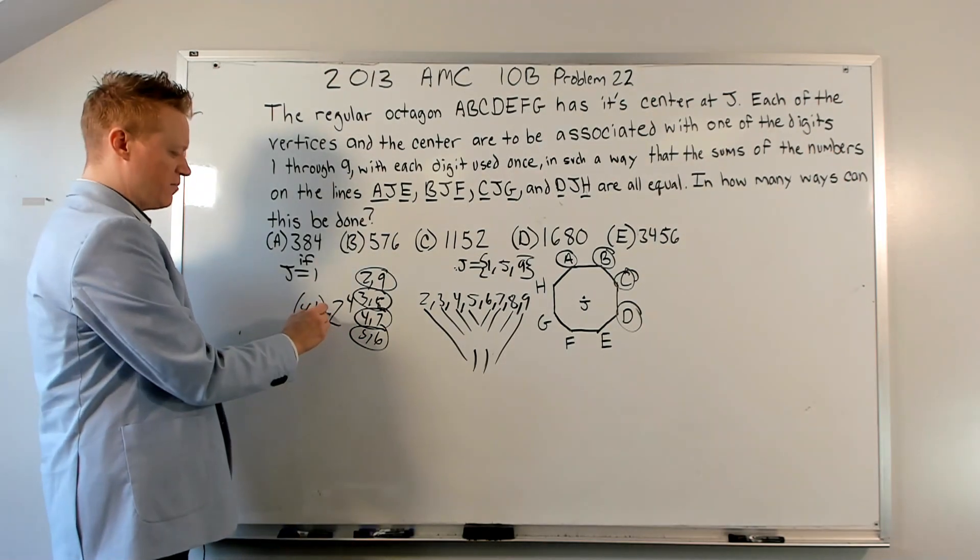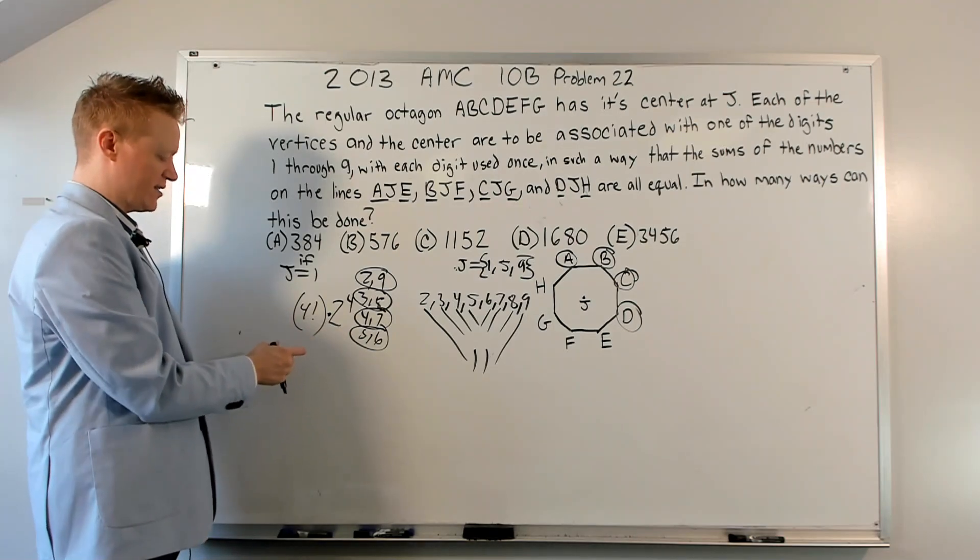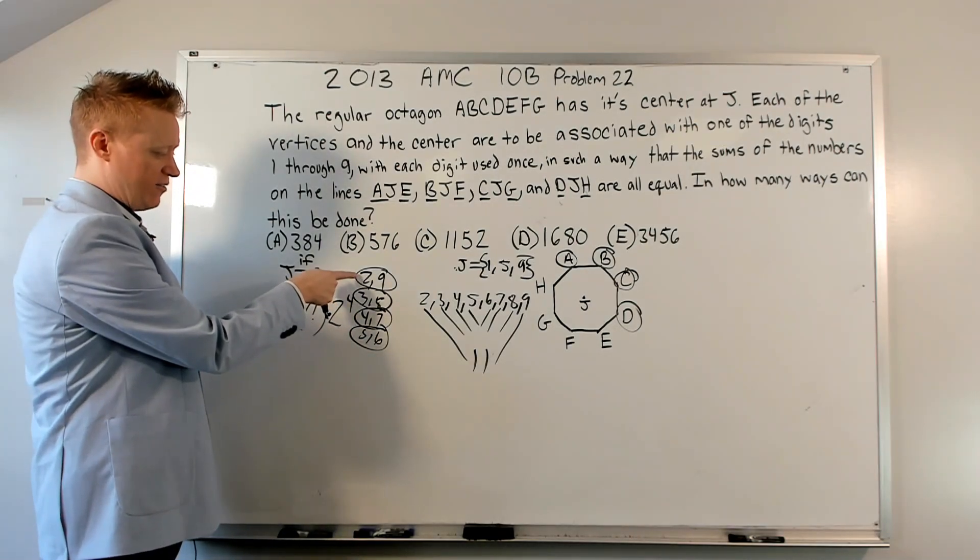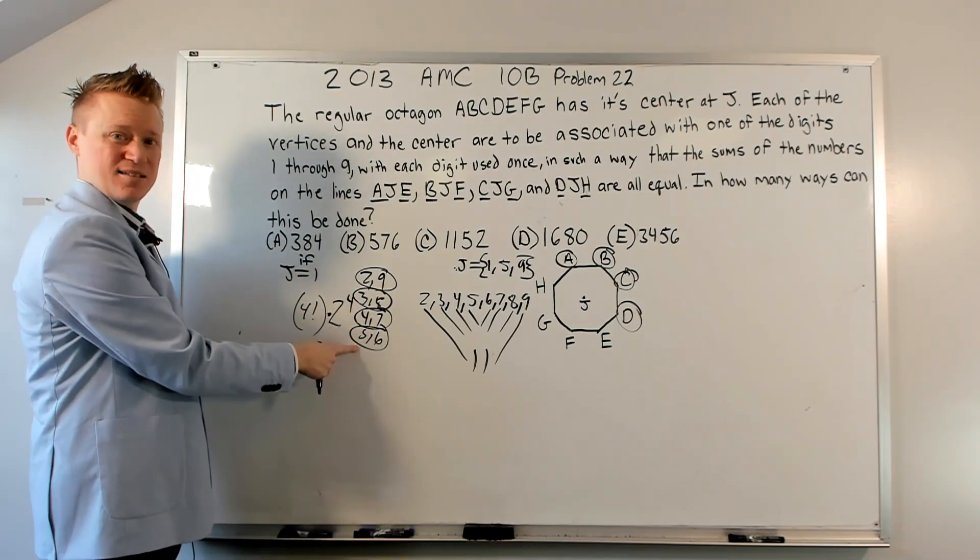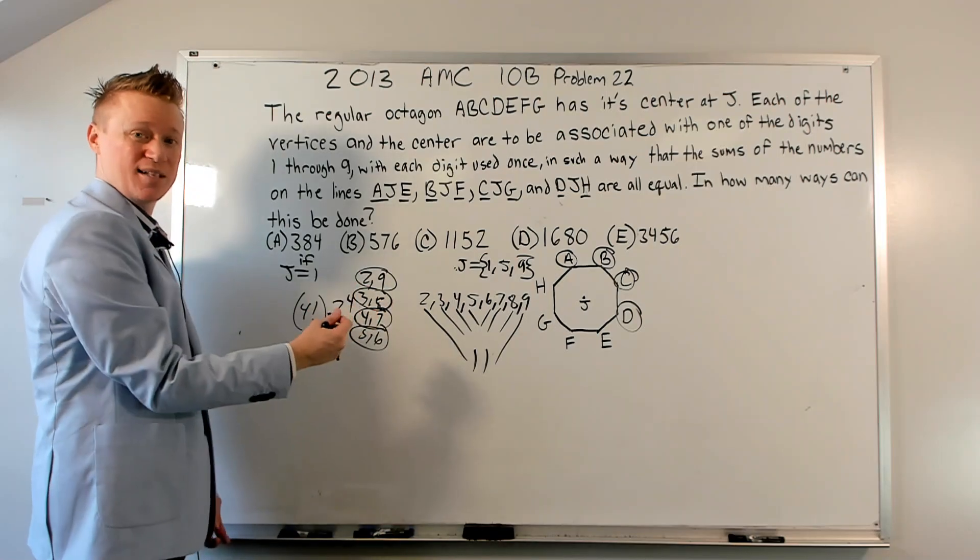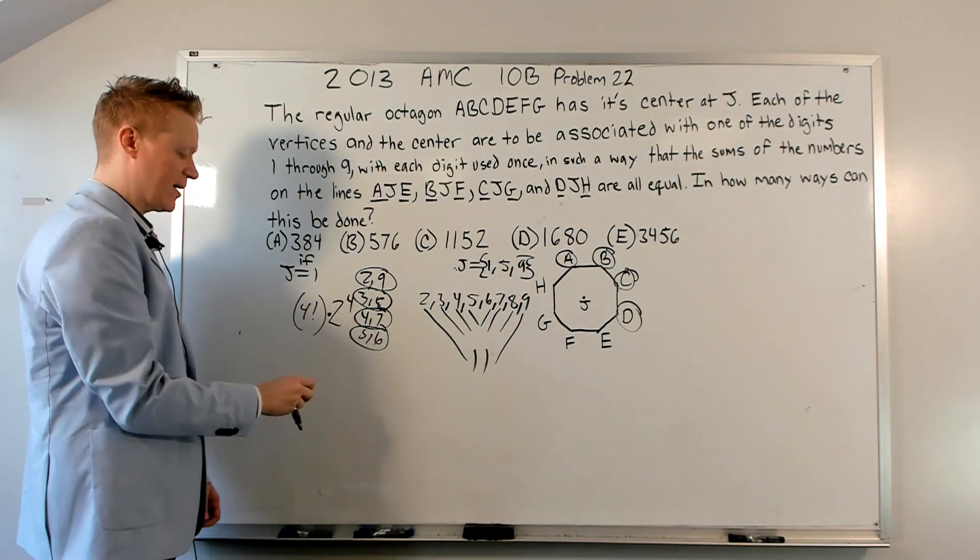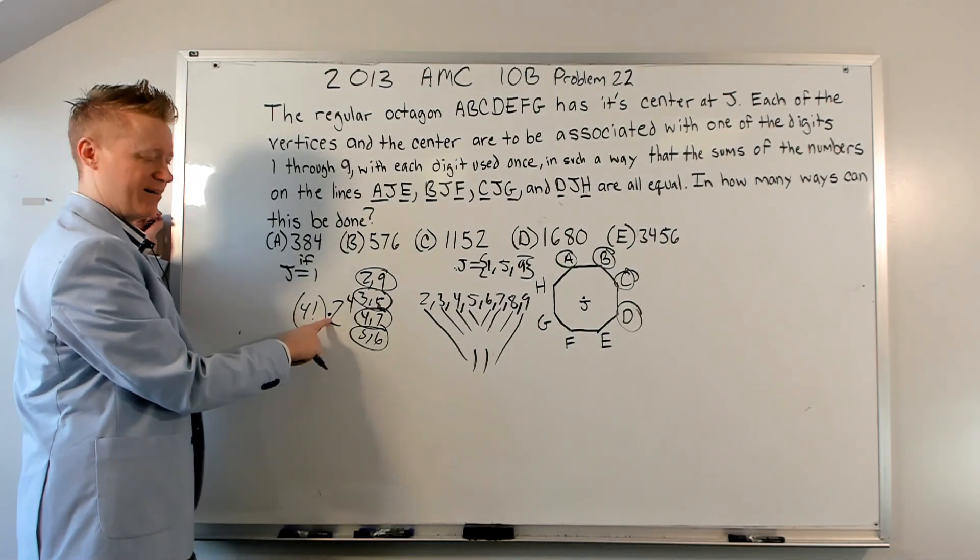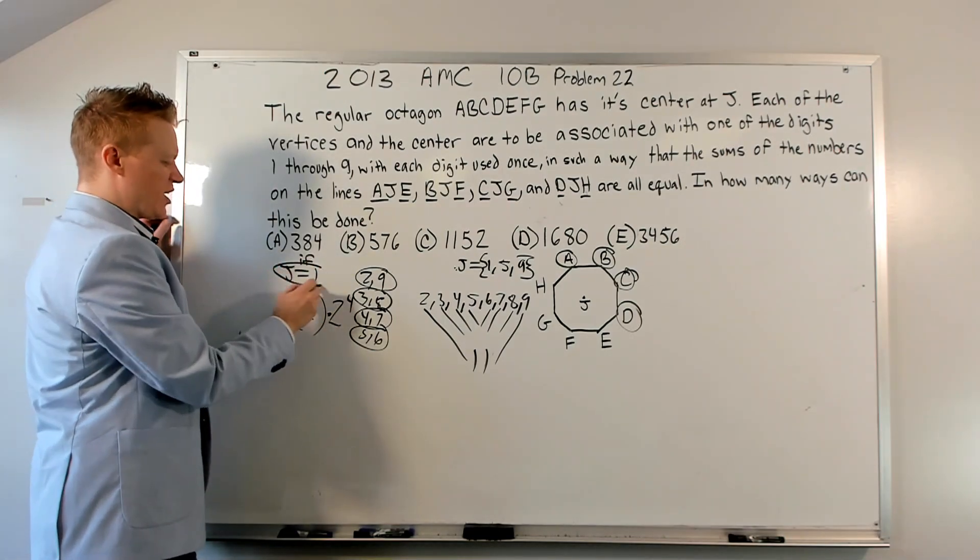By fundamental counting principle, these are two different events. The first event is the selection of the arrangement of the orders of these. The second event is once they're arranged, which one is A and which one is E? And there's always two ways to arrange that, okay? So based on fundamental counting principle, we're going to multiply right here. Alright, that's only if J equals 1.